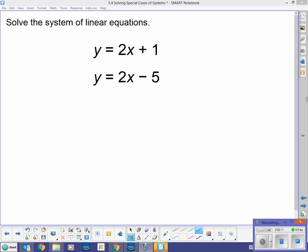Solve the system of linear equations. I have y equals 2x plus 1, and y equals 2x minus 5. I'm going to use the substitution method to do this, because since 2x plus 1 equals y, I can use that to substitute for y in that second equation. So, 2x plus 1 equals 2x minus 5. So basically, I've done the substitution method here.